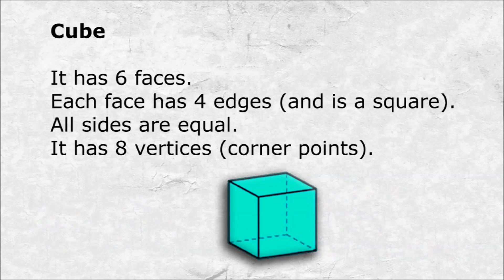Cube. It has six faces. Each face has four edges and is a square. All sides are equal. It has eight vertices, which are corner points.